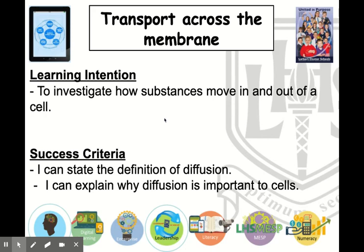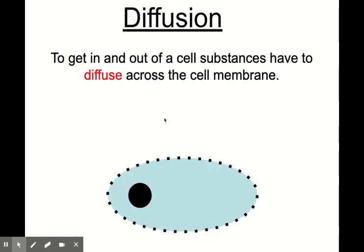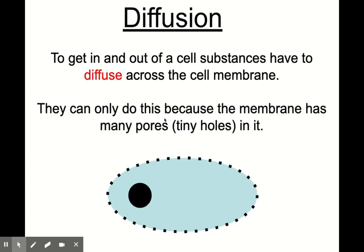Our learning intention is to investigate how substances move in and out of the cell. Our success criteria: we want to be able to state the definition of diffusion and explain why diffusion is important to cells. To get in and out of a cell, substances diffuse across the cell membrane. They can only do this because the membrane has many pores or tiny holes in it. Small molecules can move between the phospholipids and proteins to get through the membrane by the process of diffusion.